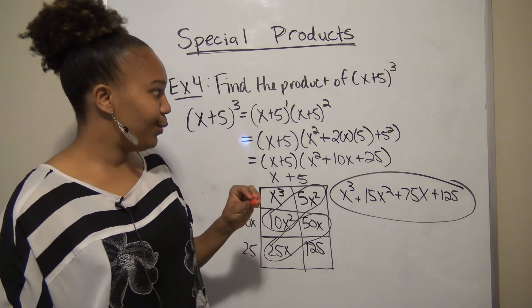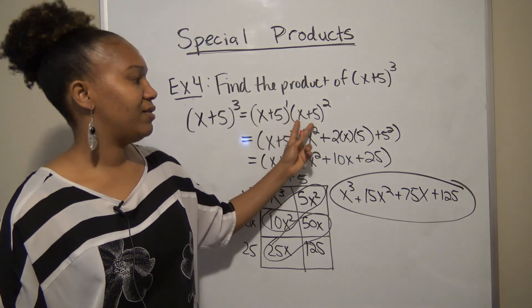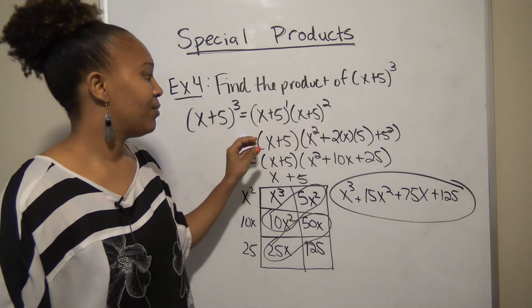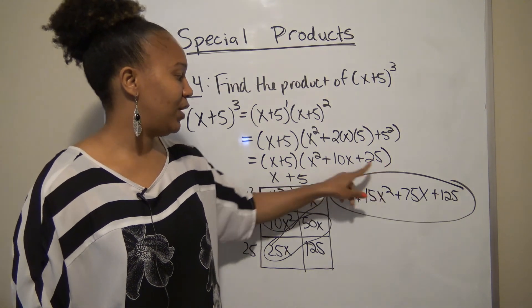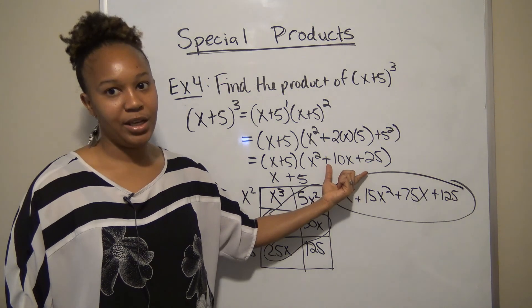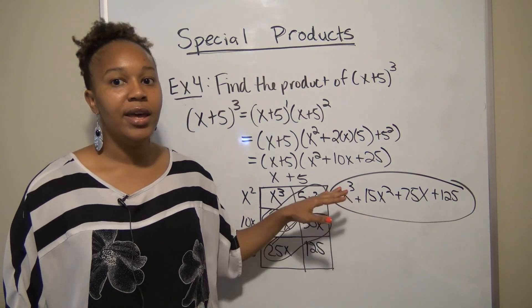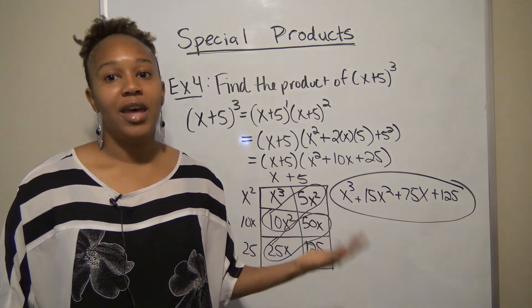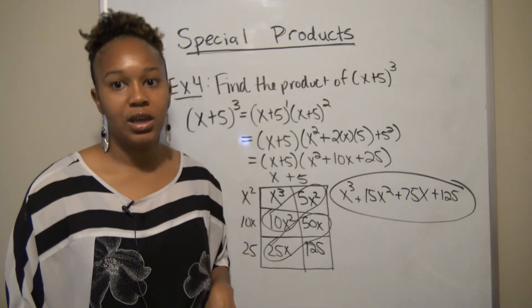So the final solution is x³ + 15x² + 75x + 125. To summarize what we did: we broke (x + 5)³ into (x + 5)(x + 5)², squared the binomial to get x² + 10x + 25, then used the box method to multiply the binomial by the trinomial and simplify.